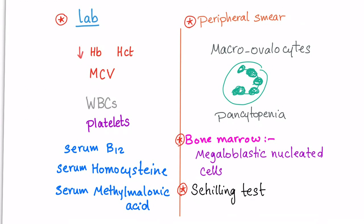Lab results in B12 deficiency. What about hemoglobin? Will be decreased. How about hematocrit? Decreased. MCV? Increased. White blood cells and platelets? May be decreased. Why? Pancytopenia.